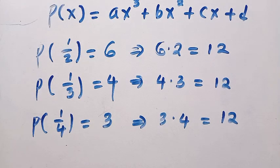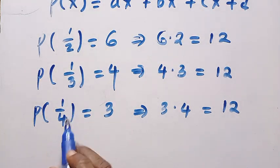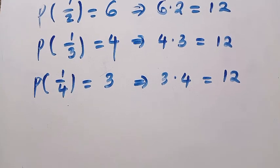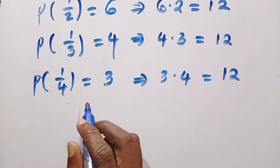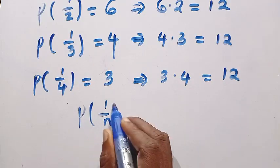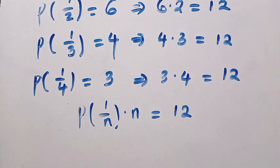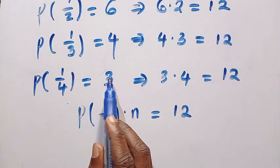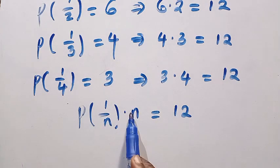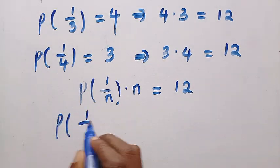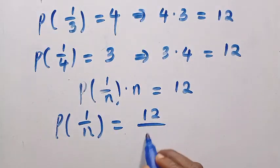How can we get the general formula from this? Since all these domains are fractions, we can see that if you have P of 1 over n, and multiply it by n, this will always give us 12. So this tells us that P of 1 over n equals 12 divided by n.